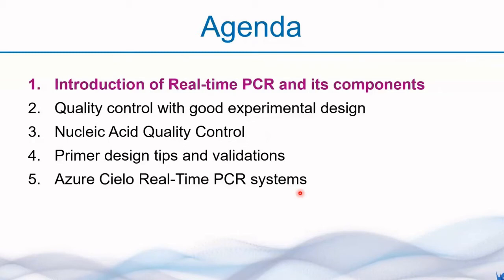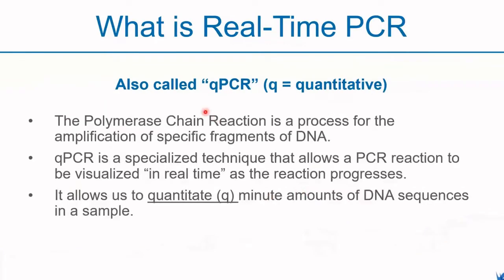Real-time PCR, also called QPCR, where the Q stands for quantitative and PCR stands for polymerase chain reaction. Polymerase chain reaction is a method used widely in molecular biology to make millions to billions of copies of a specific fragment of DNA. Real-time PCR, or QPCR, is a specialized technique that allows a PCR reaction to be visualized in real-time as the reaction progresses. QPCR allows us to quantitate minute or small amounts of DNA sequences in a sample.